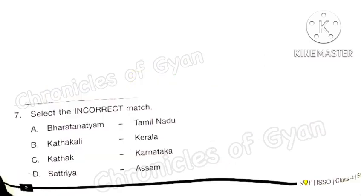Question 7: Select the incorrect match. The incorrect match is option C: Kathak is a dance form of Uttar Pradesh.